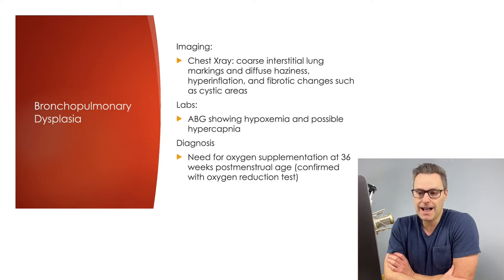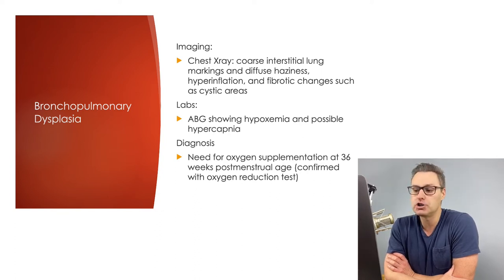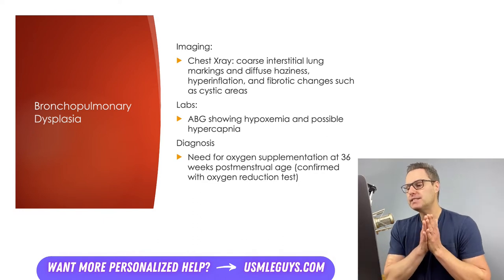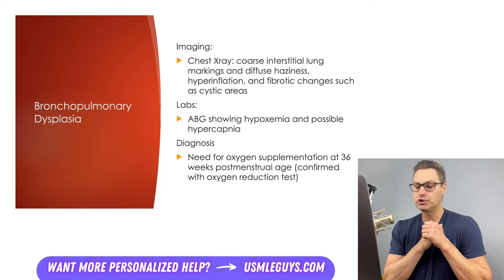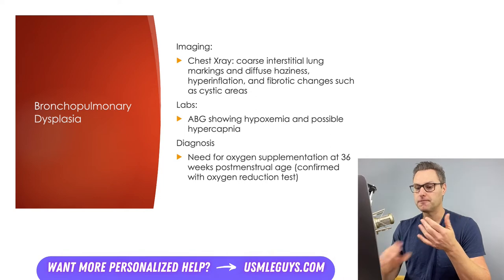On labs, the ABG can show hypoxemia and possibly hypercapnia. The diagnosis is made when there's a need for oxygen supplementation at 36 weeks postmenstrual age. An oxygen reduction test can also be used to confirm this need — this test involves placing the infant on room air temporarily, and if oxygen saturation falls below 90% within 60 minutes, we would consider that test finding positive.